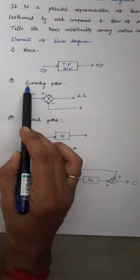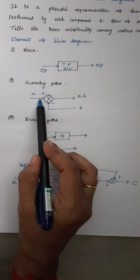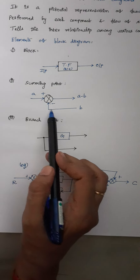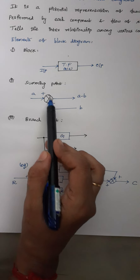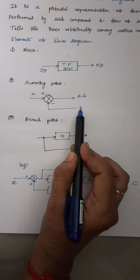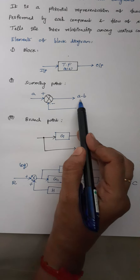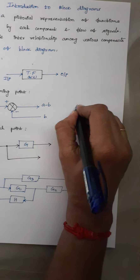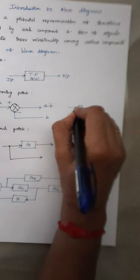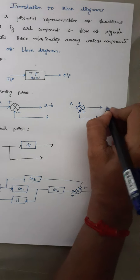The next one is summing point. As the name indicates, summing is nothing but adding. This is the general representation of a summing point. Depending upon the signs of the input signals, either the two signals will be added or subtracted. For example, here we are having a summer and to this summer we are having signal A with a positive sign and signal B with a negative sign. So automatically the output is A minus B. If again we consider a summer where input A has a positive sign and another input B also has a positive sign, then automatically the output will be A plus B because both are with the same positive sign.